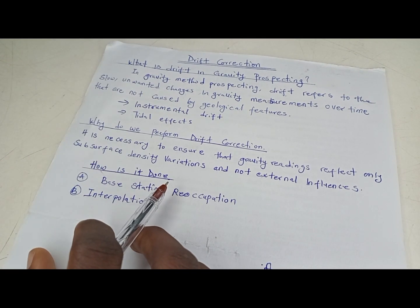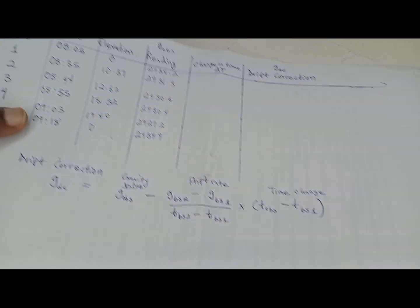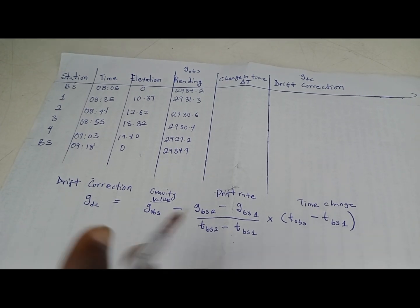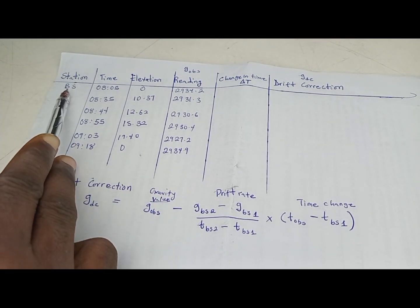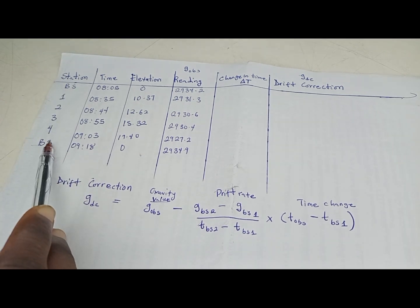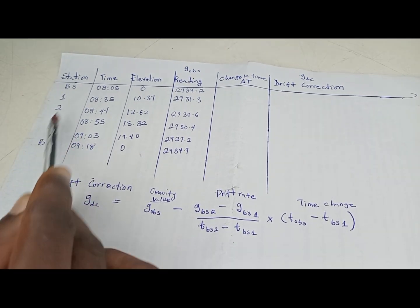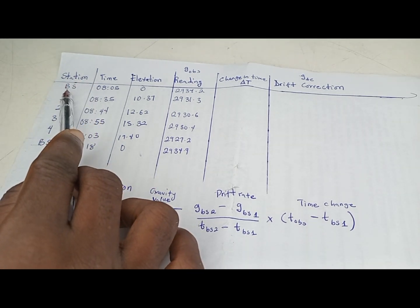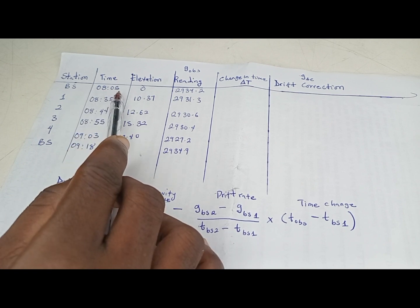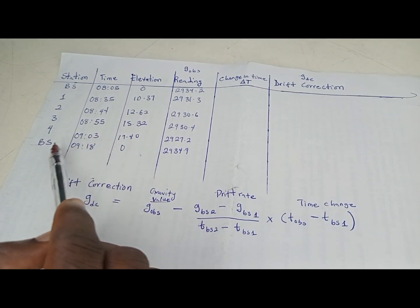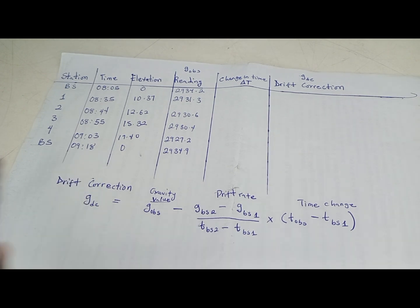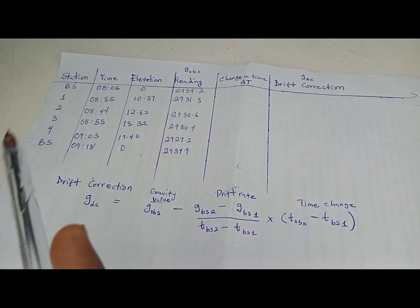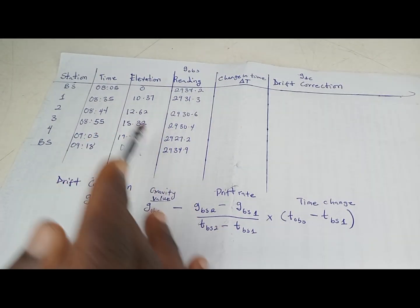Let's look at an example question and solve for drift correction. In the sample question, you can see the stations listed. They took the first base station reading, then took a second base station reading at the end of all the stations — station one, station two, station three, and station four. At base station one they took the reading at time 8:05, and when done, at 9:18 they took the second base station reading. These readings are not the true readings because they have been influenced by external factors.